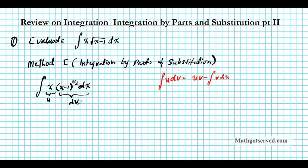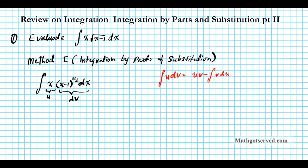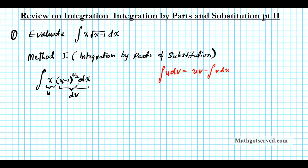This is the best order for selection here. Using LIPET, these two are powers, but the one with the fractional power should be the dv piece. So we have u equals x and dv equals x minus 1 to the 1/2 dx.